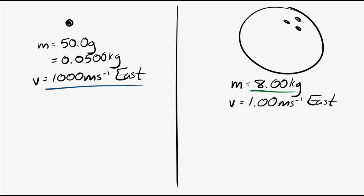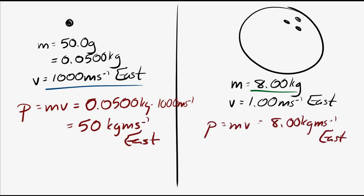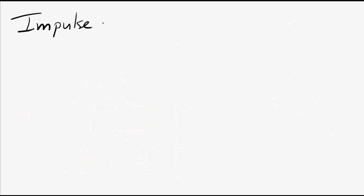You have to calculate the momentum to compare them. The momentum of the ping-pong ball is 50 kilogram meters per second to the east, and the momentum of the bowling ball is 8 kilogram meters per second to the east. It's hard to have an intuition for which is larger before doing the calculation.